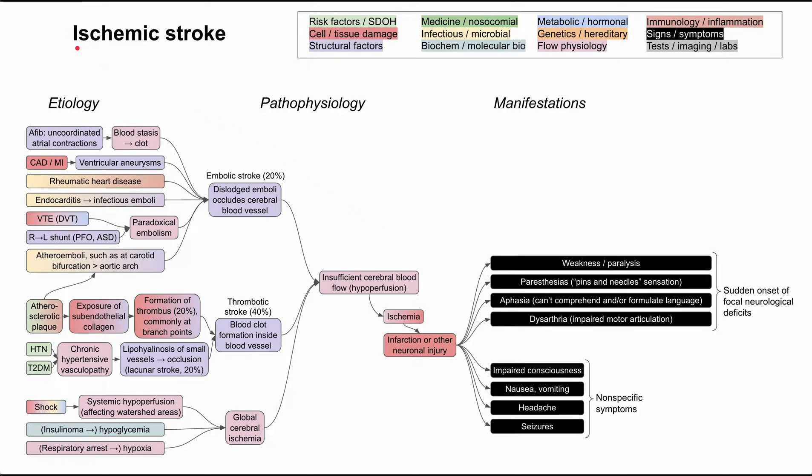This is a short mechanism of disease map on ischemic stroke. These are the types of stroke that are caused by low blood flow to the brain, which causes ischemia or lack of oxygen that then results in infarction or death of the tissue or other neuronal injury.